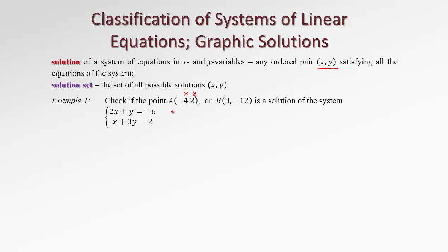Let's see. 2 times x — x is negative 4 — so it's 2 times negative 4, plus y which is 2. Is that equal to negative 6? We have negative 8 plus 2, and yes, it is negative 6. So this point satisfies the first equation.